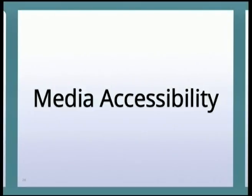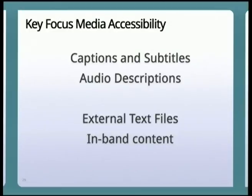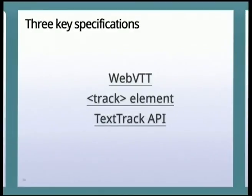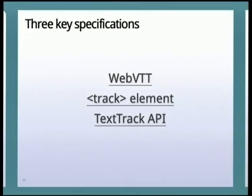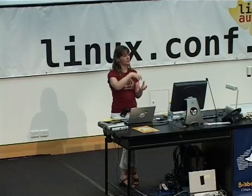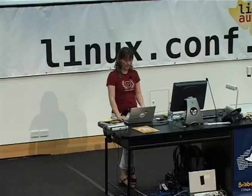Two minutes on media accessibility. We're currently focusing on getting captions, subtitles, and audio descriptions working — both as external text files and as in-band content. In-band means as part of the media file itself. Three key specifications have been made for external text files and in-band content. Web VTT is the latest — it used to be called Web SRT. It's a new file format, a bit like SRT but with more capabilities. We've also created a track element to put that into the video element, so we can reference the Web VTT file from our HTML page.